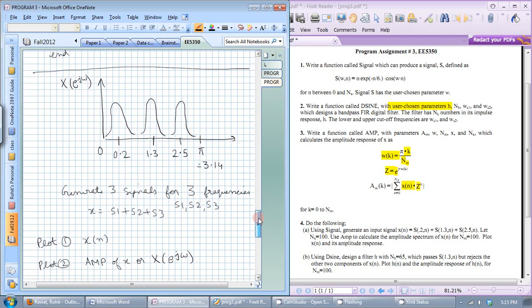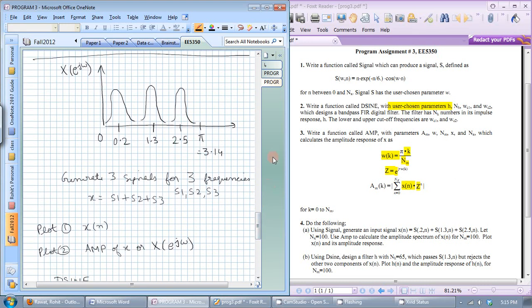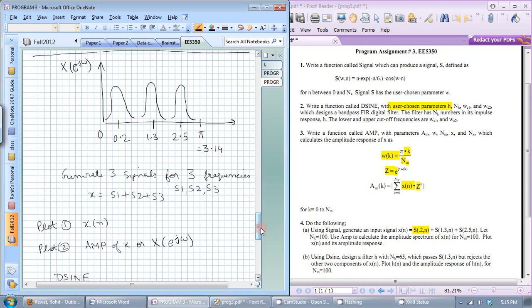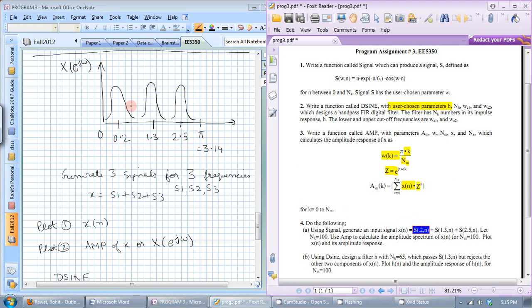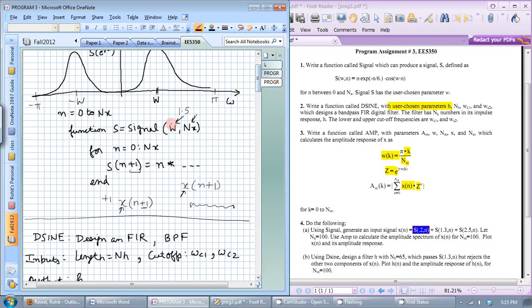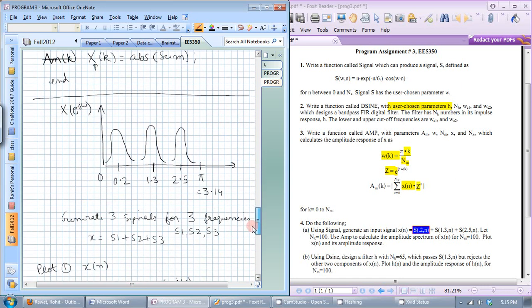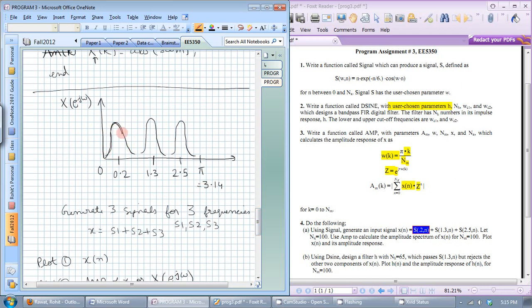So now to the actual task of the assignment. Using the signal function we can produce signals which have a frequency peak at a particular omega. First we produce a signal that has a peak at 0.2. If you call the signal function S1 equals signal 0.2, nx where nx is 100.